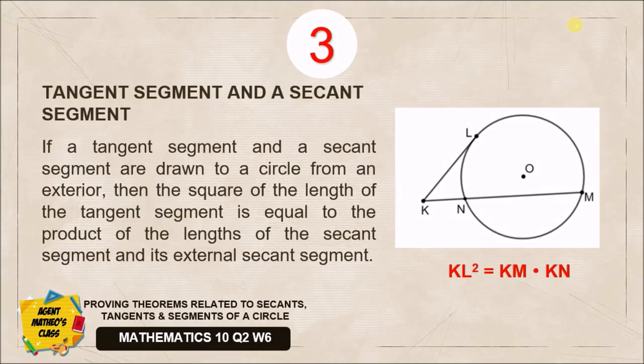At this point we will now have the tangent segment and a secant segment. If a tangent segment and a secant segment are drawn to a circle from an exterior point, then the square of the length of the tangent segment is equal to the product of the length of the secant segment and its external part. In short, with the use of this illustration.